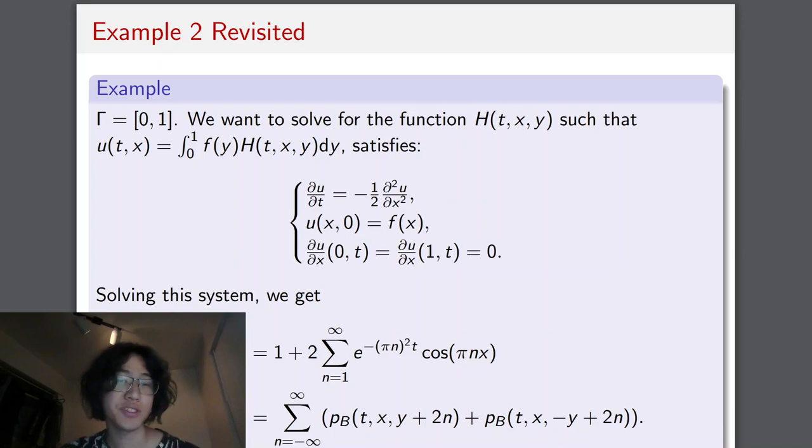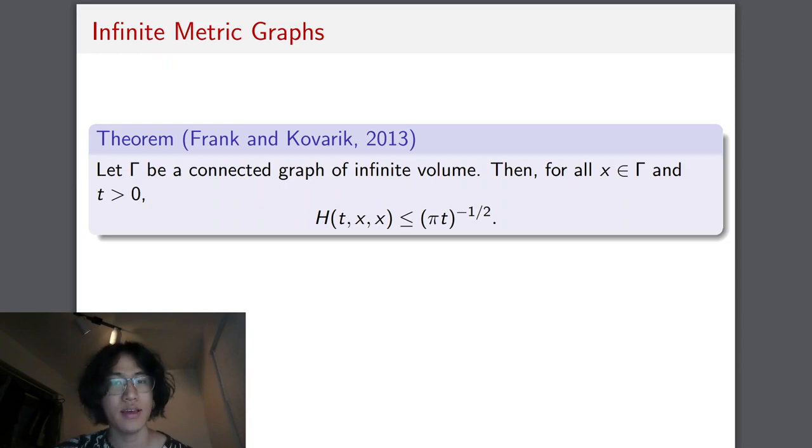Now with this in mind, we can revisit our previous example on the unit closed interval. So this time, if we're solving for the heat kernel, which I denote as h instead of p, then we actually get the exact same solution that we got from earlier.